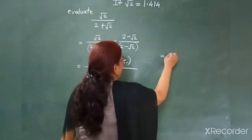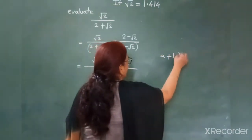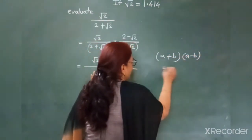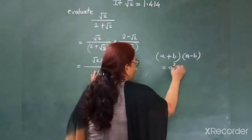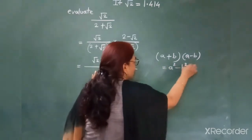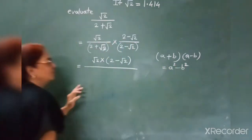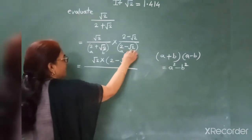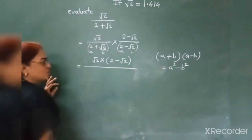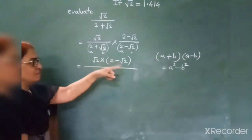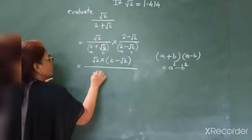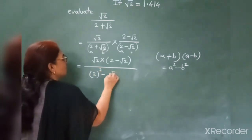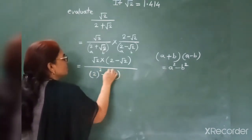We can use the identity (A + B)(A − B) = A² − B². Here this is your A and this is B. So it becomes A² minus B², which is 2² minus (root 2)².